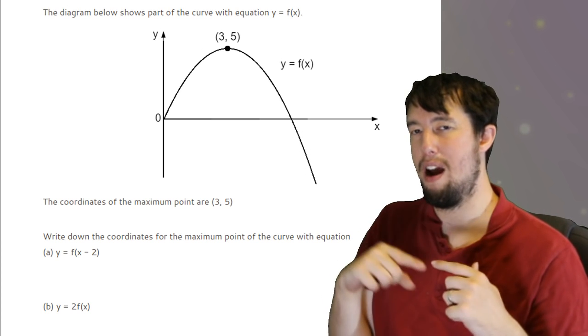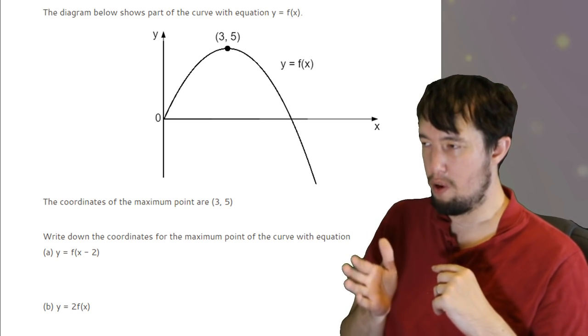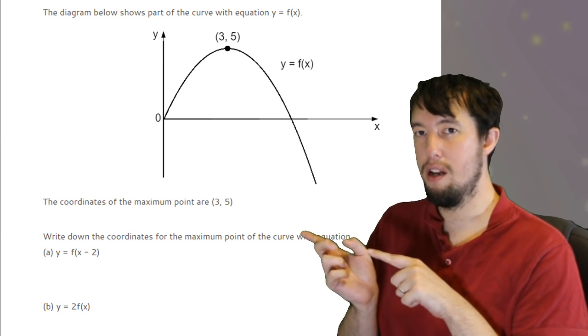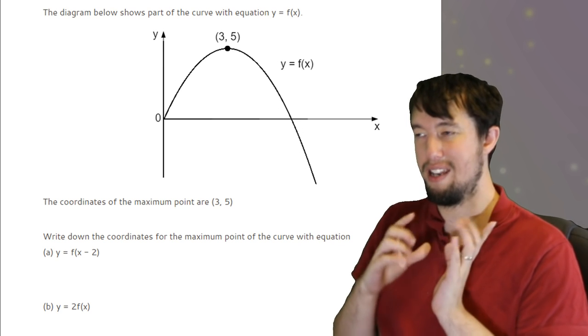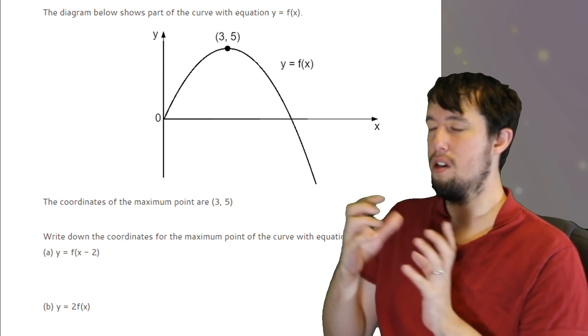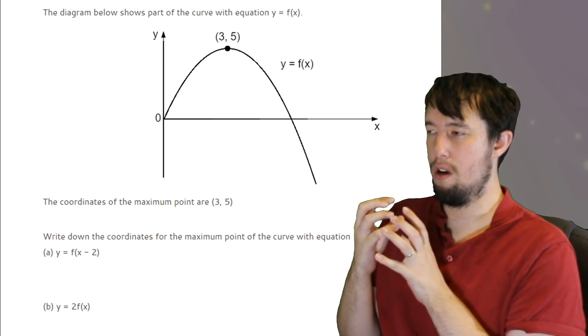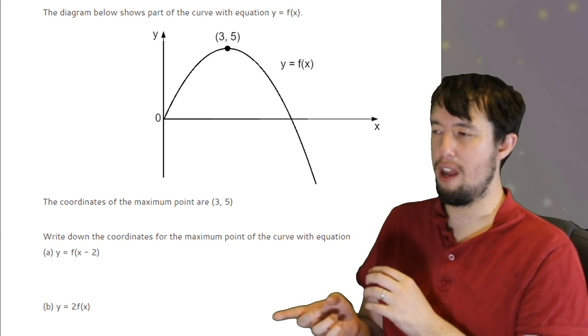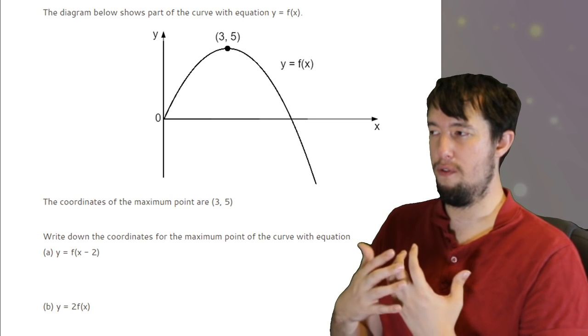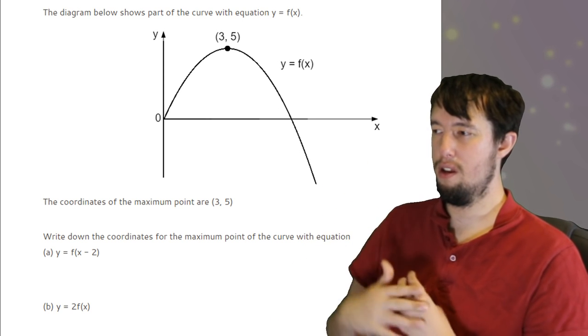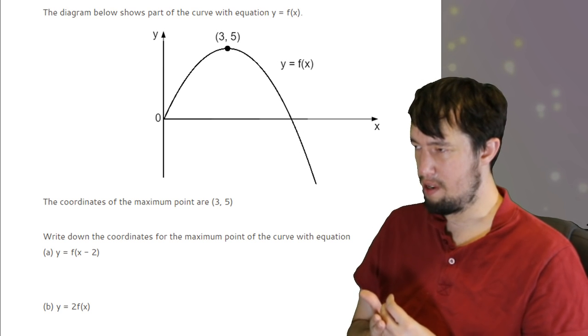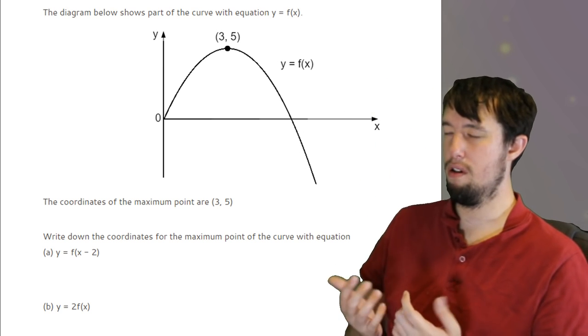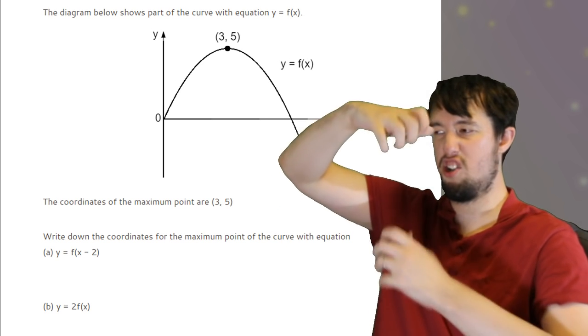Anything inside the brackets, obviously it's to do with x, it's the opposite way round to what you think. So for this one, it says x minus 2. Minus 2 does not mean that way. Minus 2 means right. It's the opposite of which way you think. So you just shift it right two. So the coordinates of that would be 5, 5. And for the outside one, it's to do with the y-direction. So it would become 3, 10. It just doubles the, it stretches it out. Now a 2 on the inside, a times 2 on the inside would compress it in. Remember, it's the opposite way round to what you'd think.